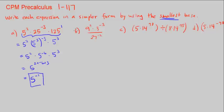Let's move on to B. We're given 9 squared times 3 to the negative 3 divided by 27 to the negative 2. The base of 9 can be looked at as 3 squared, so it's 3 squared and then it's squared times 3 to the negative 3 over 27 is 3 cubed, so it's 3 cubed to the negative 2 power.